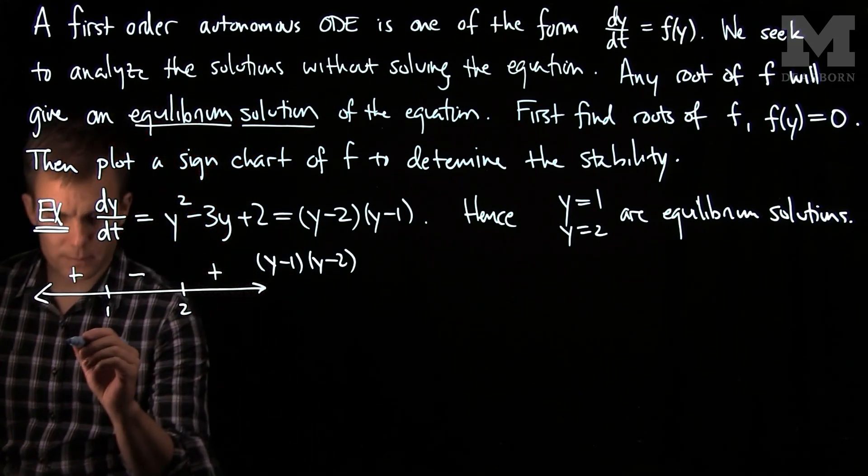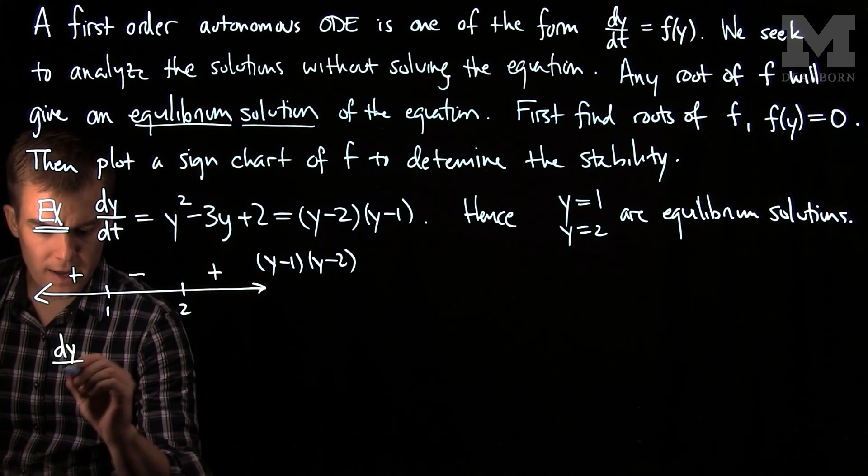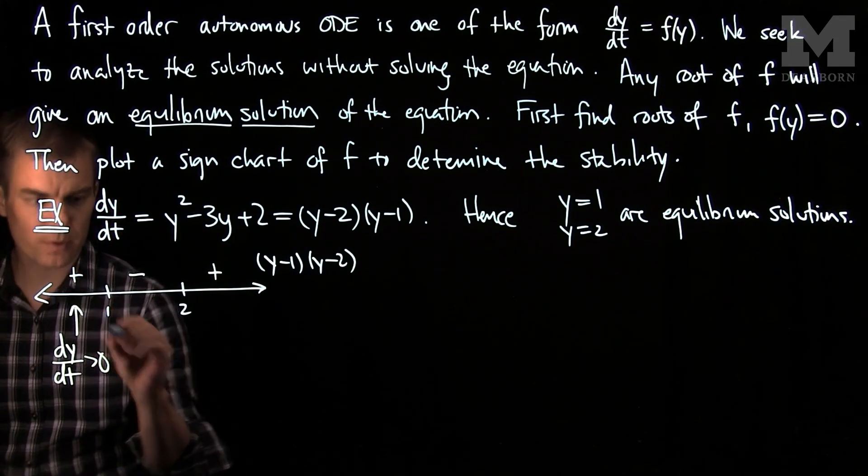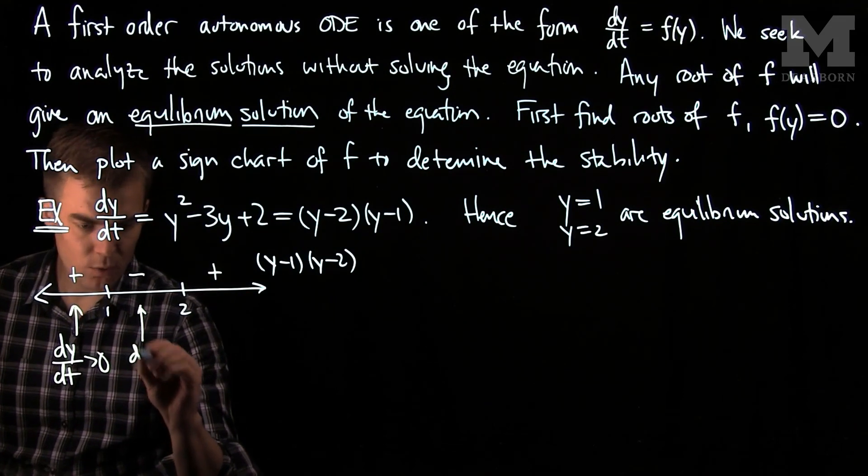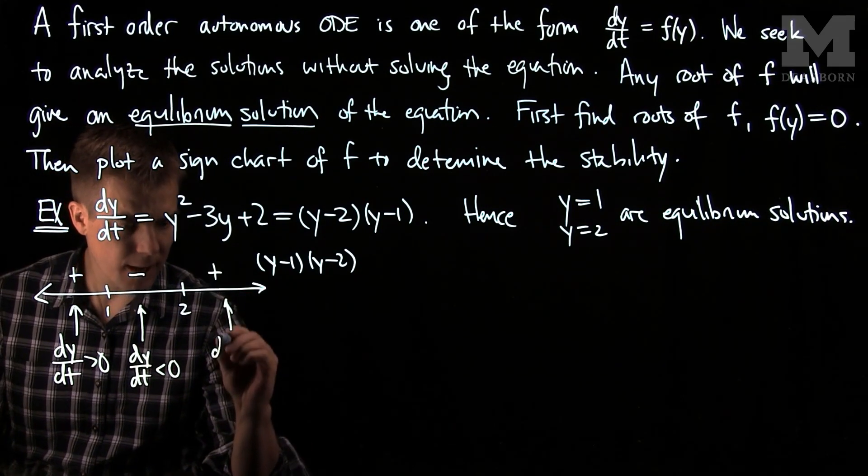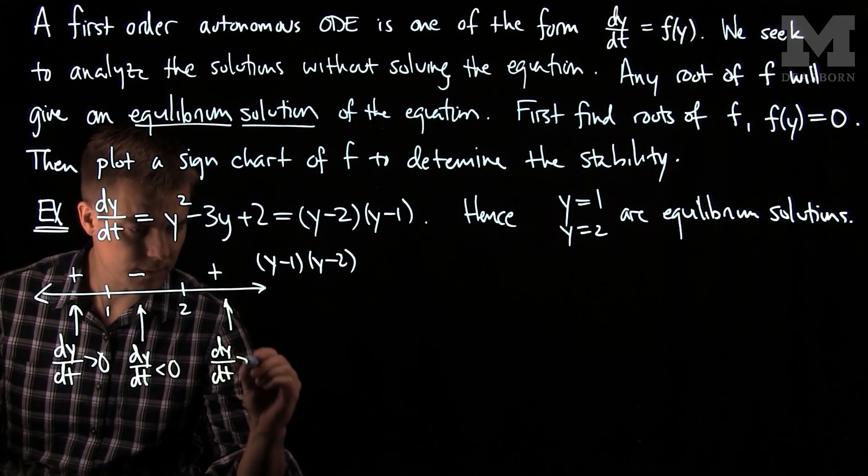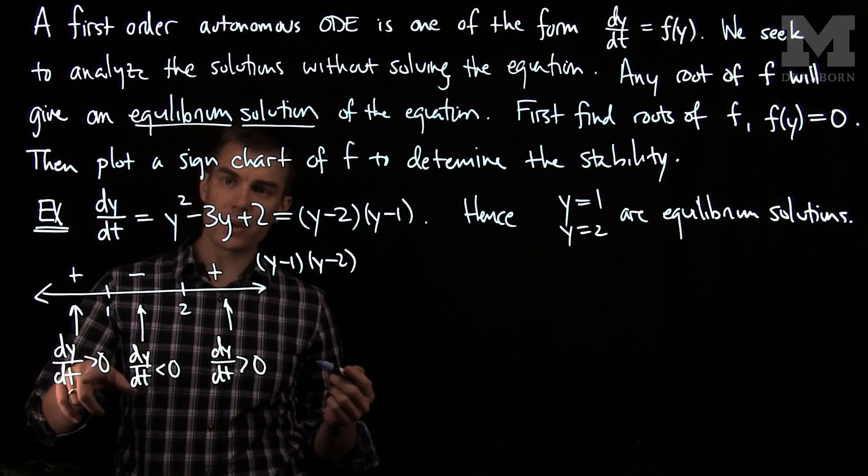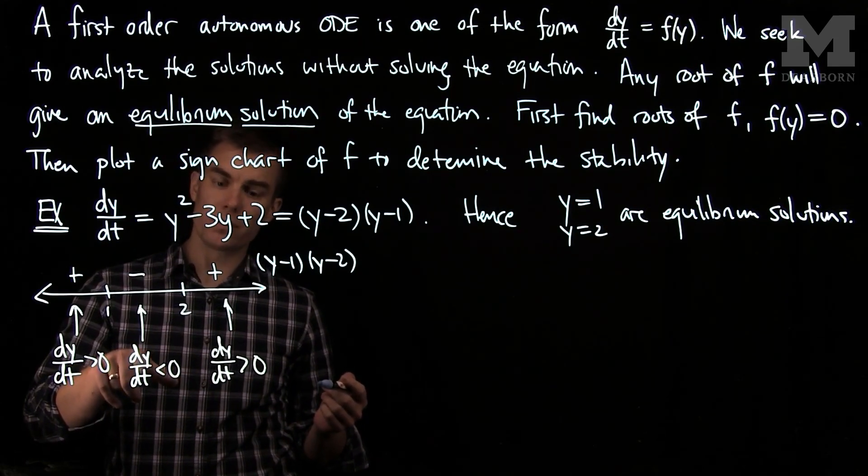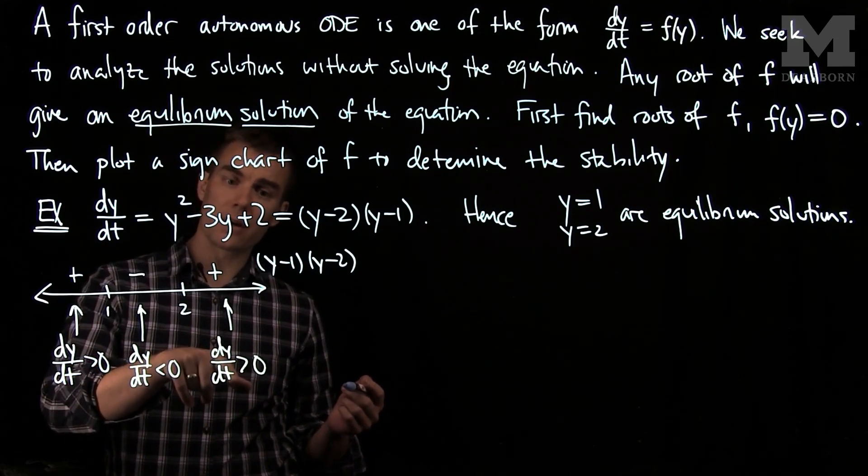Which tells us the following information: dy/dt will be positive in this range, dy/dt will be negative in this range, and dy/dt will be positive in this range. Which tells us that our solution will be increasing if we start less than 1, decreasing if we start between 1 and 2, or increasing if we start greater than 2.